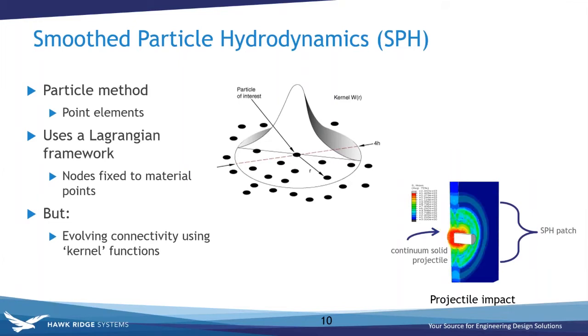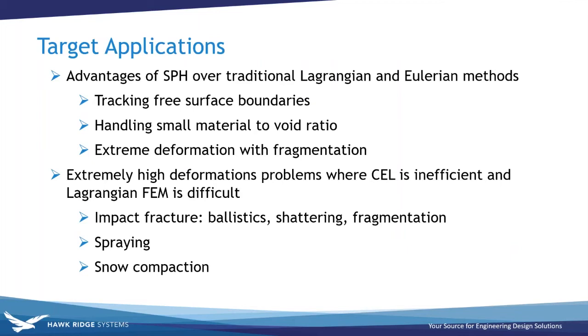Here you can see an example of the structural mechanics implementation of SPH where we have a solid particle going through a plate where when certain stress levels are reached, the plate turns to SPH elements. Some of the key advantages of SPH over Lagrangian and Eulerian methods is if we have free surface boundaries or if we have a small material to void ratio in CEL. We would need to model the entire mesh where a fluid could be present, but in SPH we're only dealing with the fluid and deformations where we have fragmentation. For things like impact fracture spraying and compaction, SPH has some advantages over CEL.